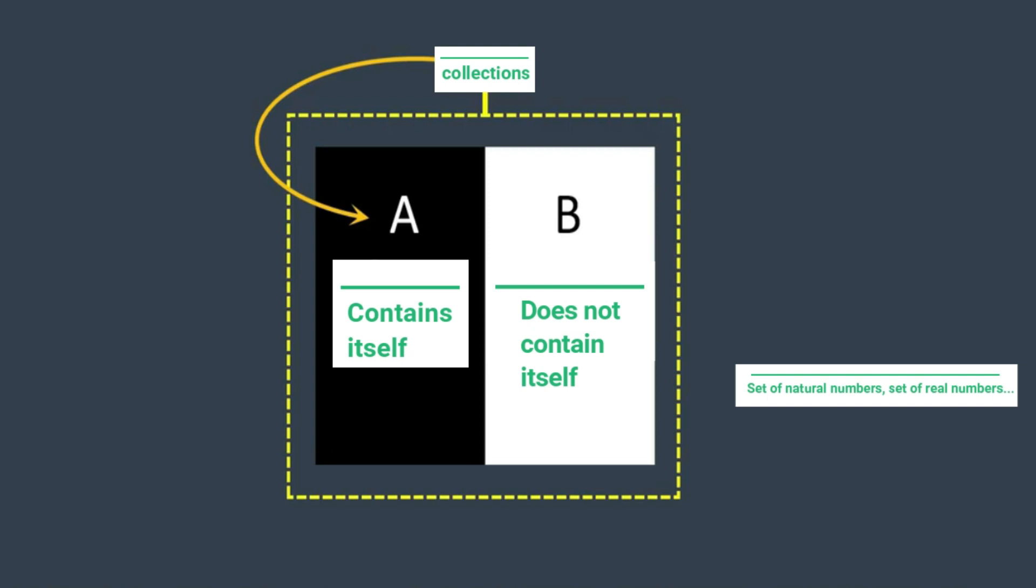This paradoxical state is none other than Russell's paradox. Named after the British philosopher and logician Bertrand Russell, this paradox was a groundbreaking revelation in the world of mathematics. It caused quite a stir, leading to what is often referred to as the first crisis in mathematics. Yet, despite the upheaval it caused, Russell's paradox also provides us with a thought-provoking parallel to our concept of creation and nothingness.